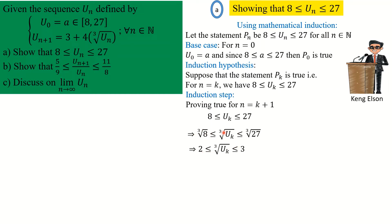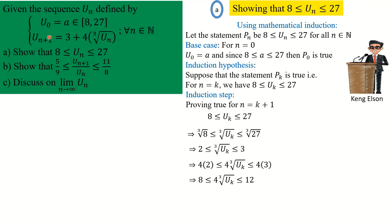We then add 3 to all sides: 8 + 3 = 11, the center becomes 3 + 4·∛(u_k) = u_{k+1}, and 12 + 3 = 15. So we have obtained that u_{k+1} lies between 11 and 15.